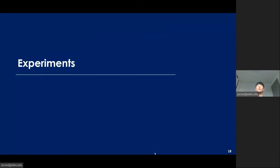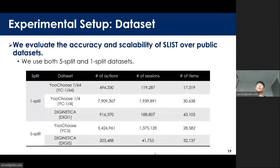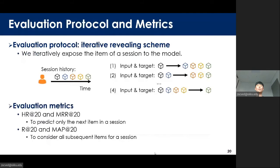Now let me introduce the experiments. We use several datasets with various characteristics to verify our experiments: YOOCHOOSE, Diginetica, Retail Rocket, and LastFM datasets. For simplicity of presentation, only YOOCHOOSE and Diginetica are shown here, but we can observe similar tendencies with the other datasets. We use the iterative reviewing scheme to evaluate each model — we iteratively expose items of a session to the model, and at each step the remaining items are used as test items. For evaluation metrics, we use Hit Ratio, MRR, Recall, and MAP.